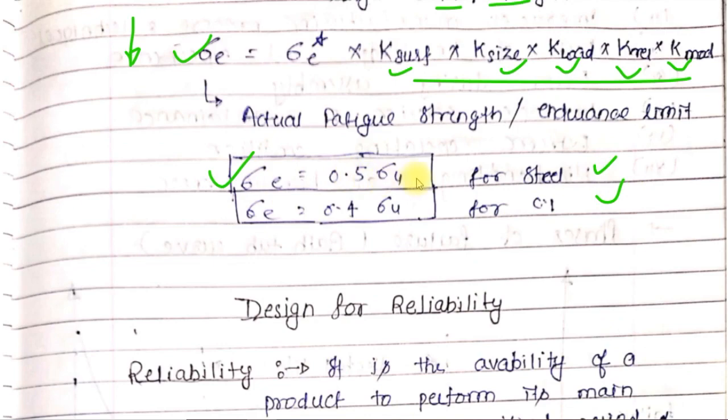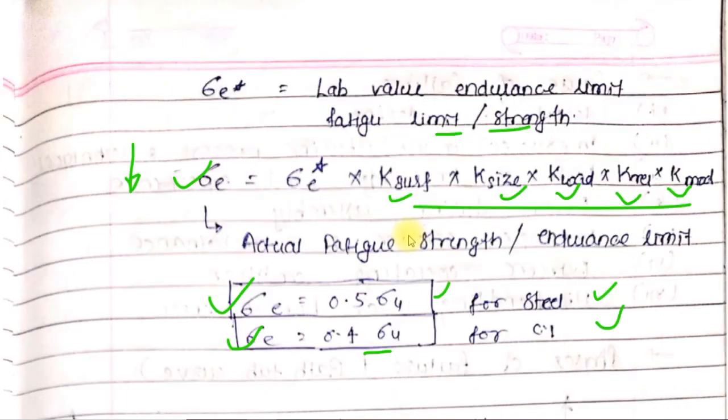Now for steel and cast iron, for steel it is 0.5 times the ultimate strength (0.5 sigma_u), and for cast iron it is 0.4 times sigma_u.